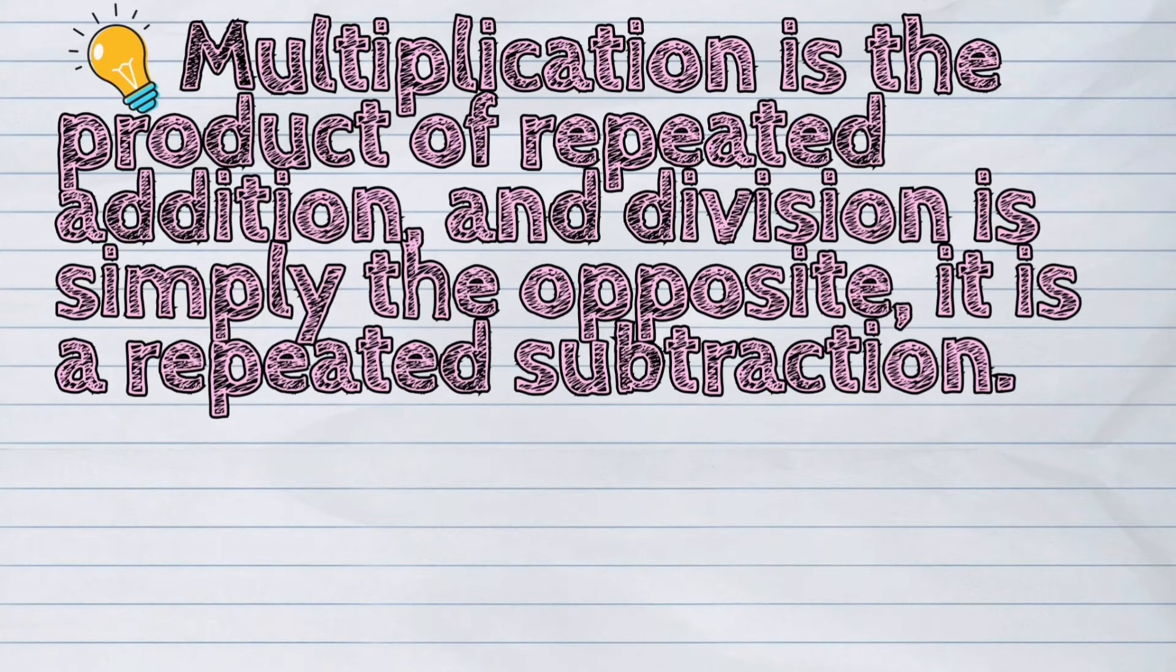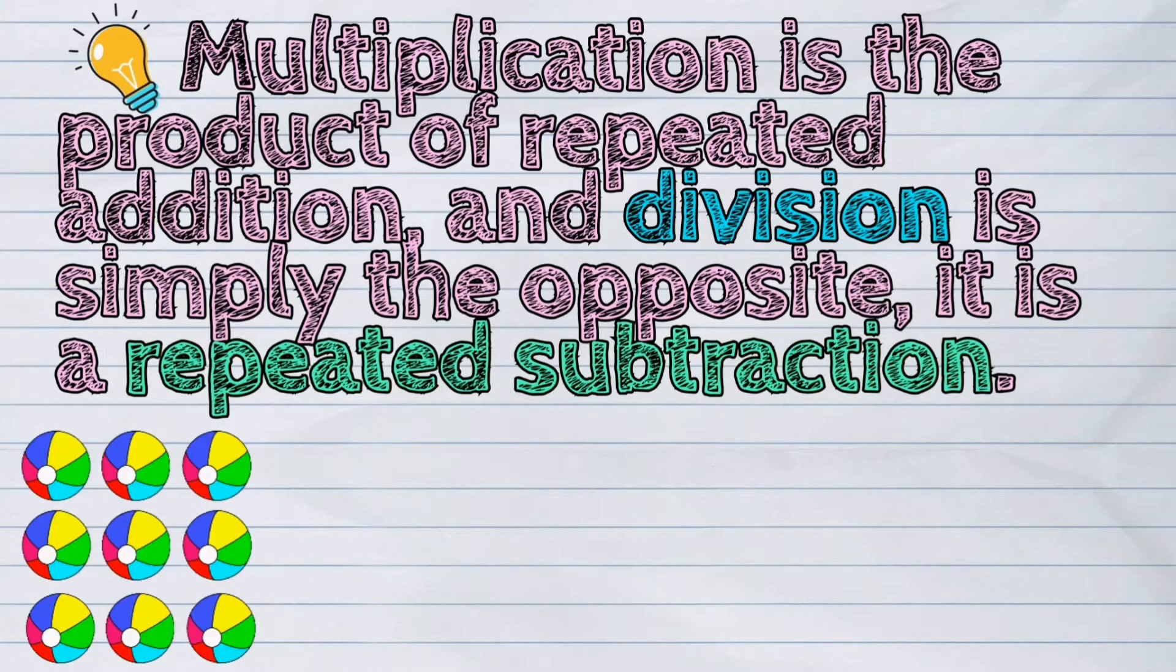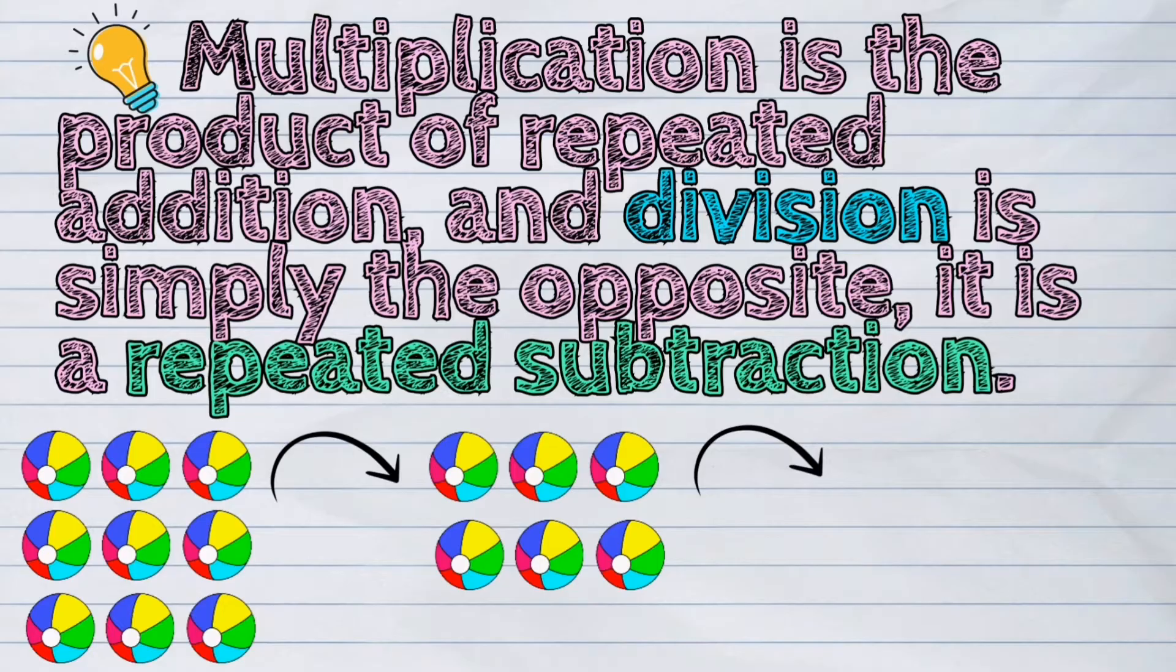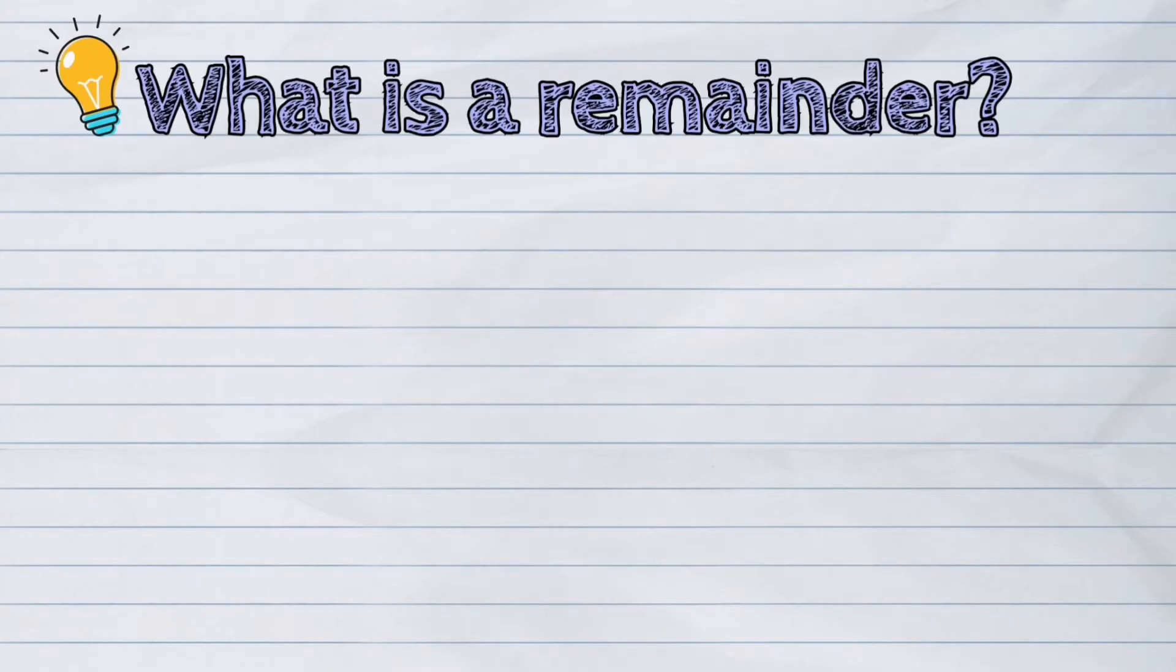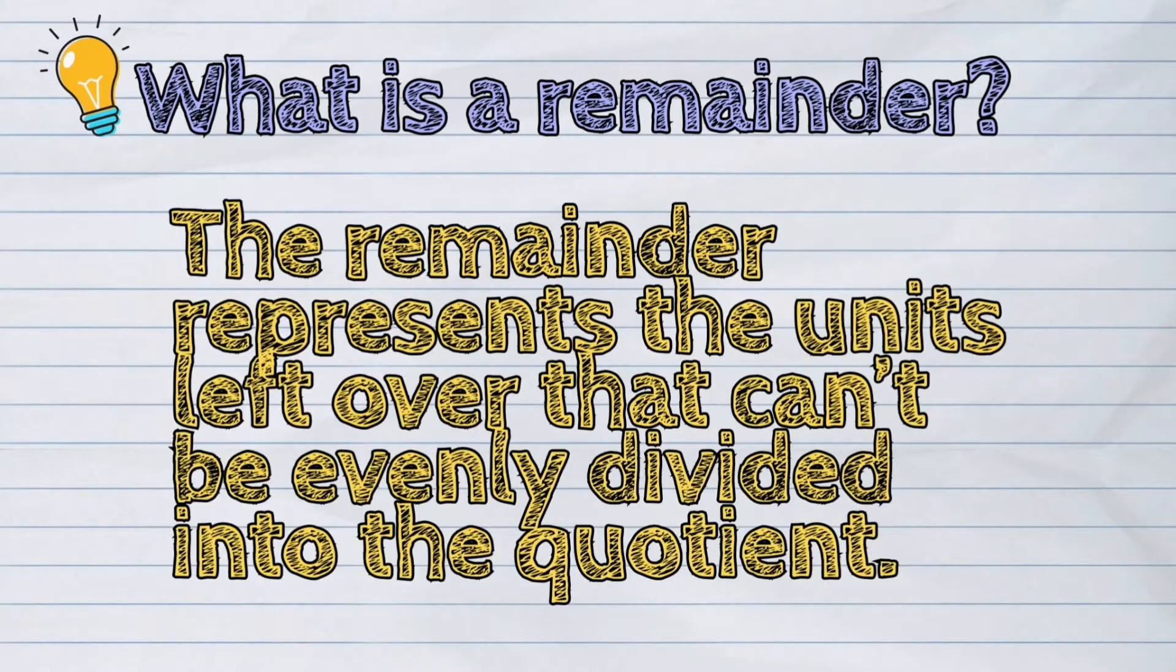We have learned before that multiplication is the product of repeated addition, and division is simply the opposite. It is a repeated subtraction. But before we learn to divide with remainder, we need to know first the definition of remainder. The remainder represents the units left over that can't be evenly divided into the quotient.